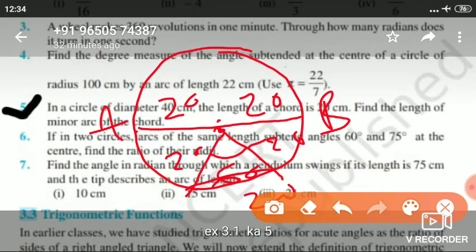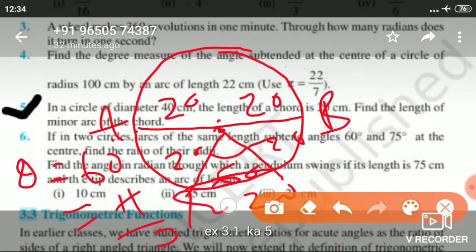Now you have to convert this angle into radian measure. So the degree will be converted into radian measure. Here theta equals 60 degrees, that will be pi by 3 radian.